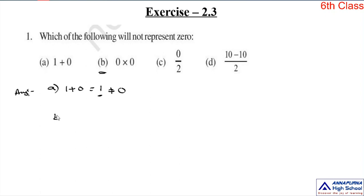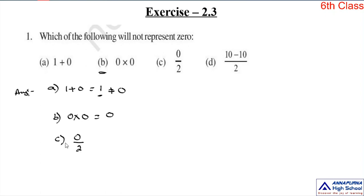Next option B: 0 into 0. 0 into 0 is always 0. So 0 into 0 is equal to 0. Option C: 0 divided by 2. I already explained this: 0 by any number is always 0. And any number by 0 is not defined. Here 0 by 2 — 0 by any number is always 0.